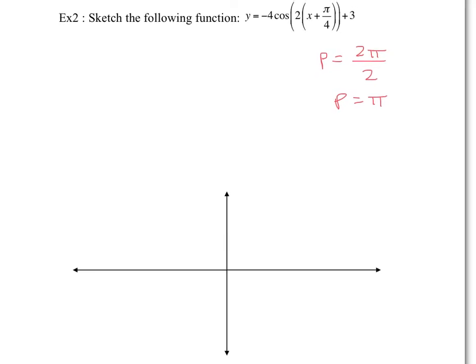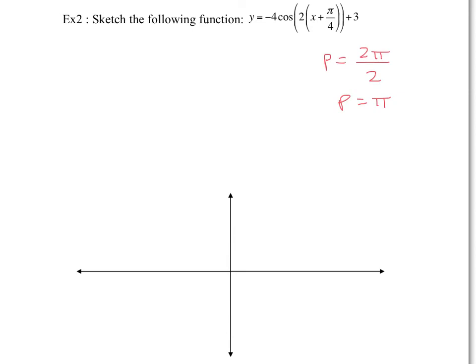Our value of d is 3, which means the central axis is at 3. I'll put a dotted line there to demonstrate the central axis. The amplitude is 4 — and don't forget, the negative only applies to the negative cosine graph, not the amplitude. So we go 4 above the central axis and 4 below. The maximum will be 7 and the minimum will be negative 1. I'll put dotted lines to represent those min and max values.